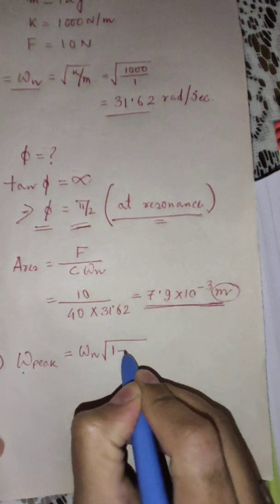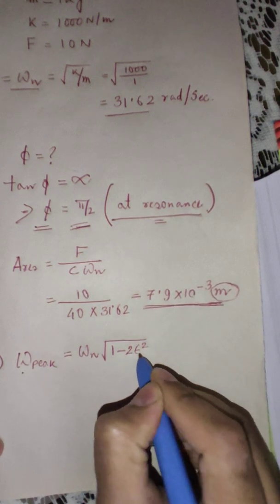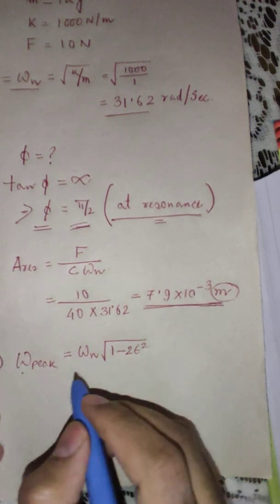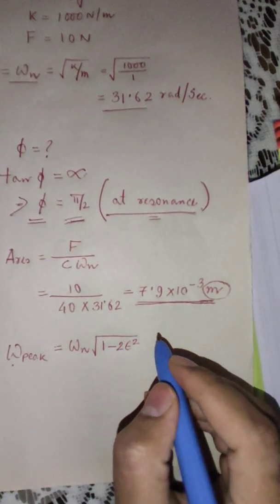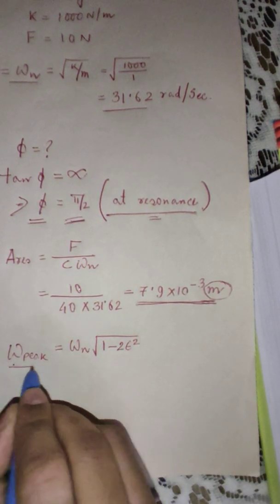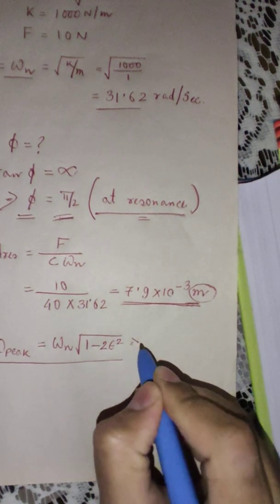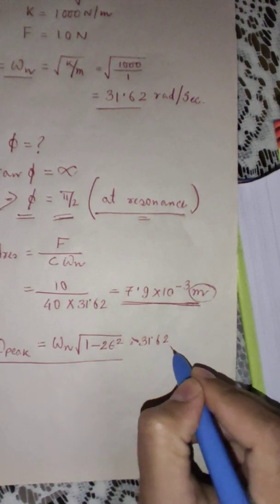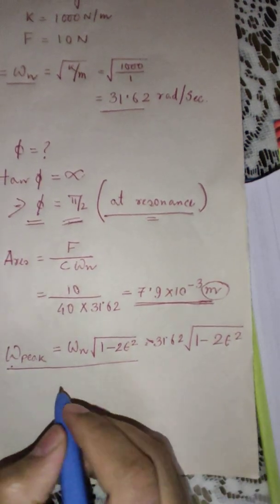We are asked to find out the disturbing frequency or external frequency at the peak amplitude. This is again a standard formula. Some formulas we may not discuss in the theory part but whenever we do these numericals, we will find various formulas at the intermediate level. This is the frequency corresponding to peak amplitude equation.